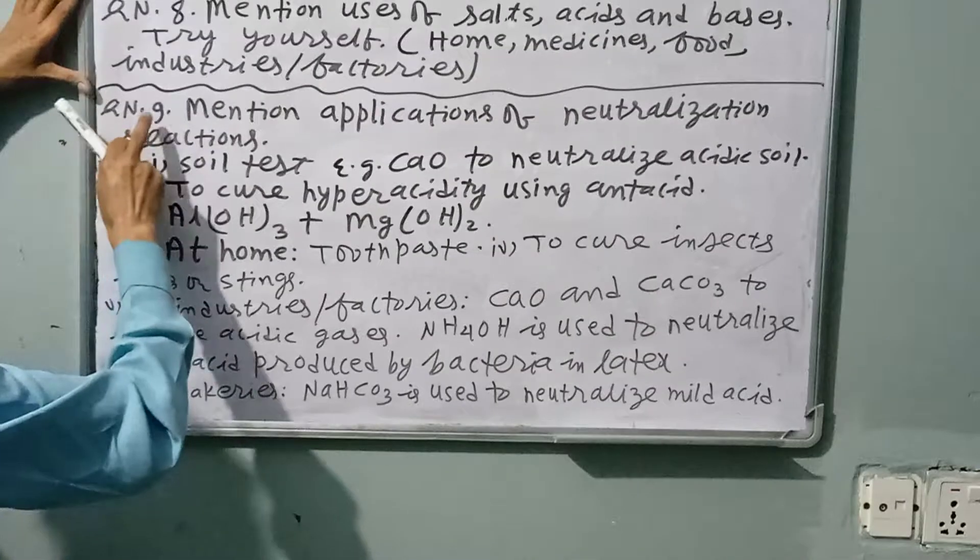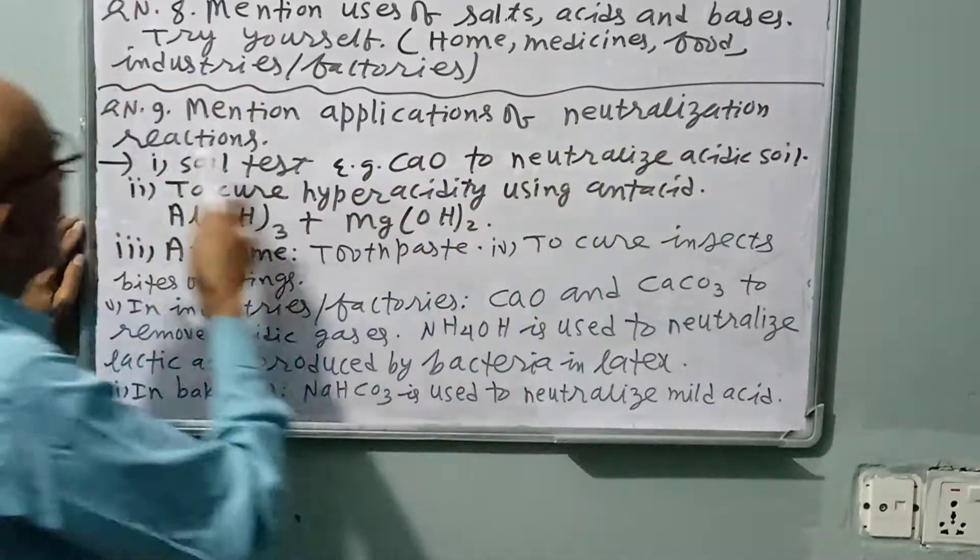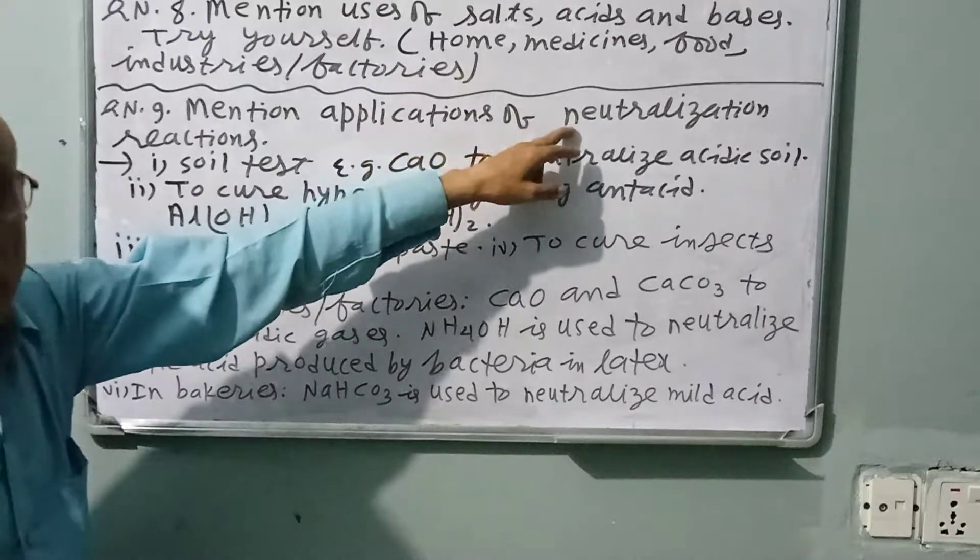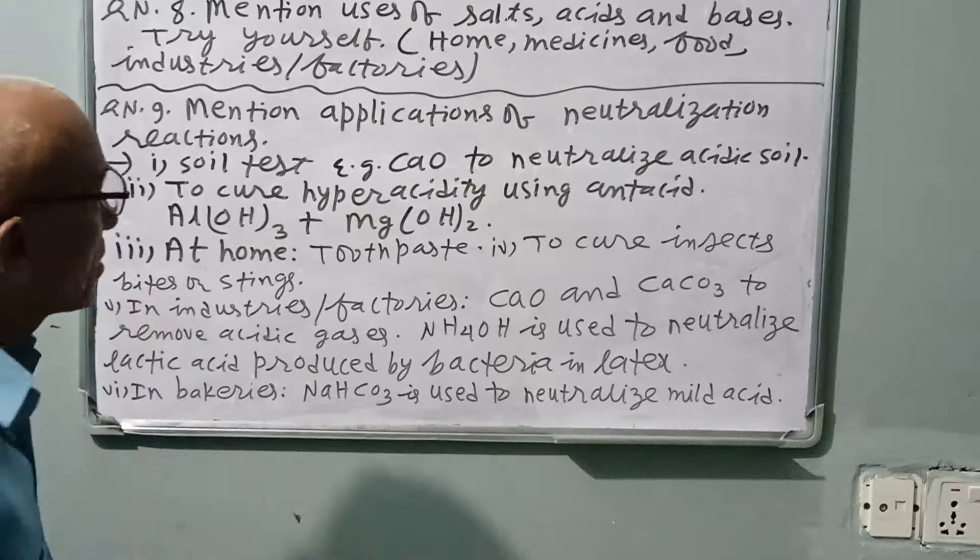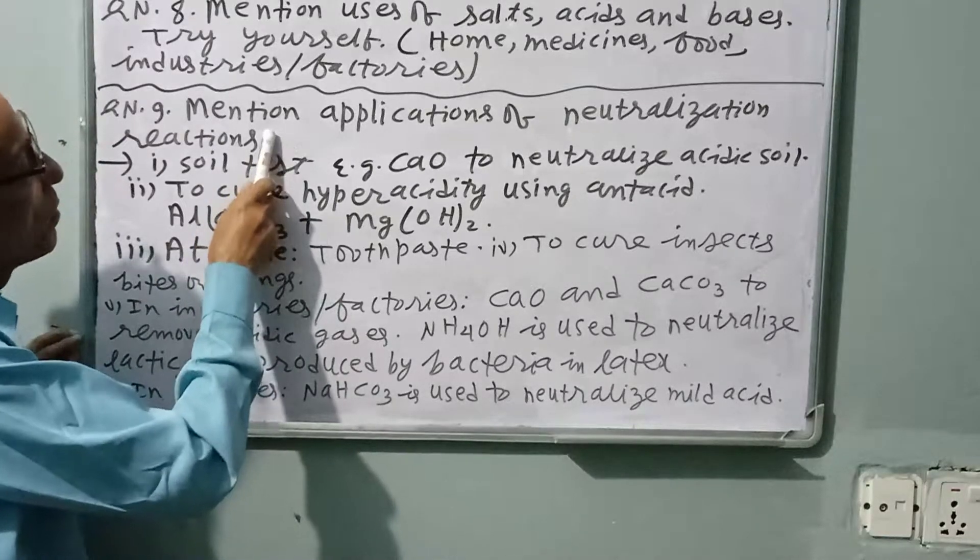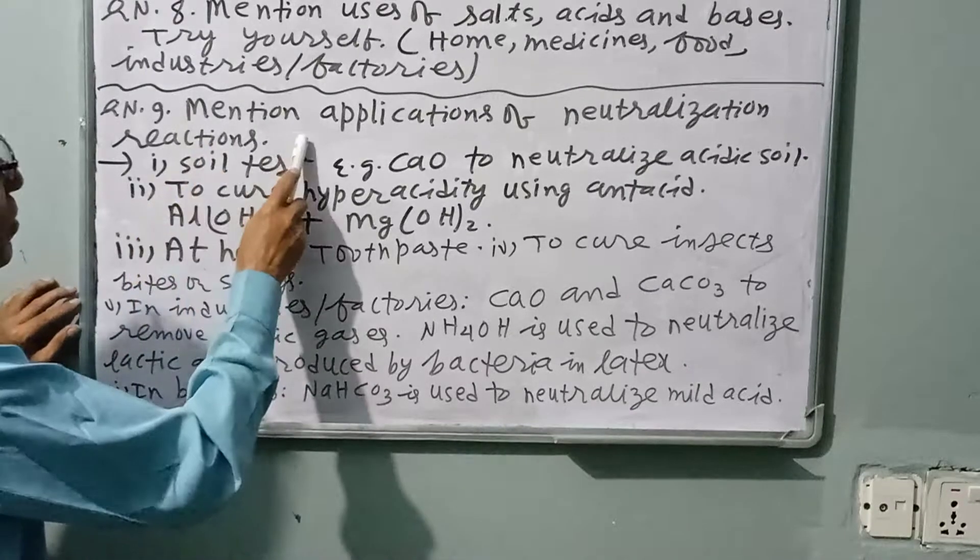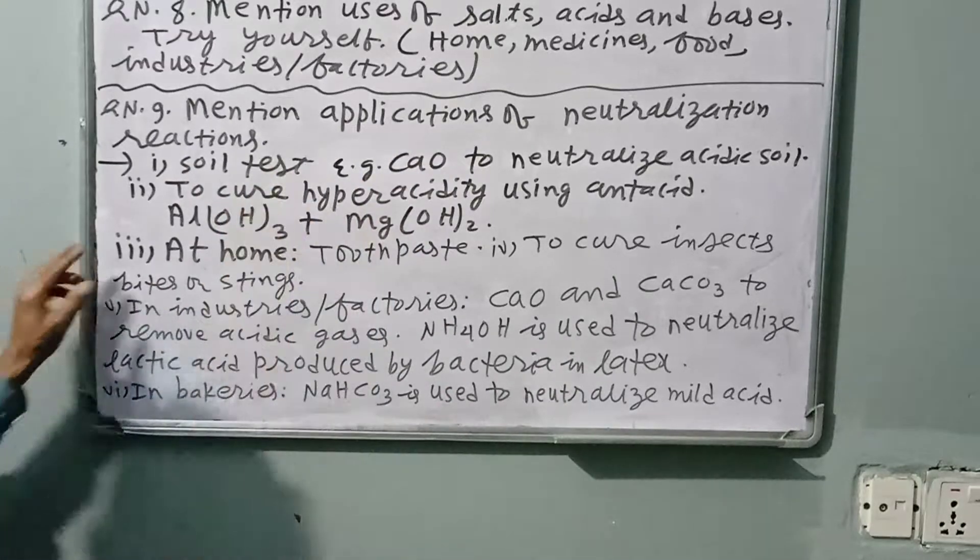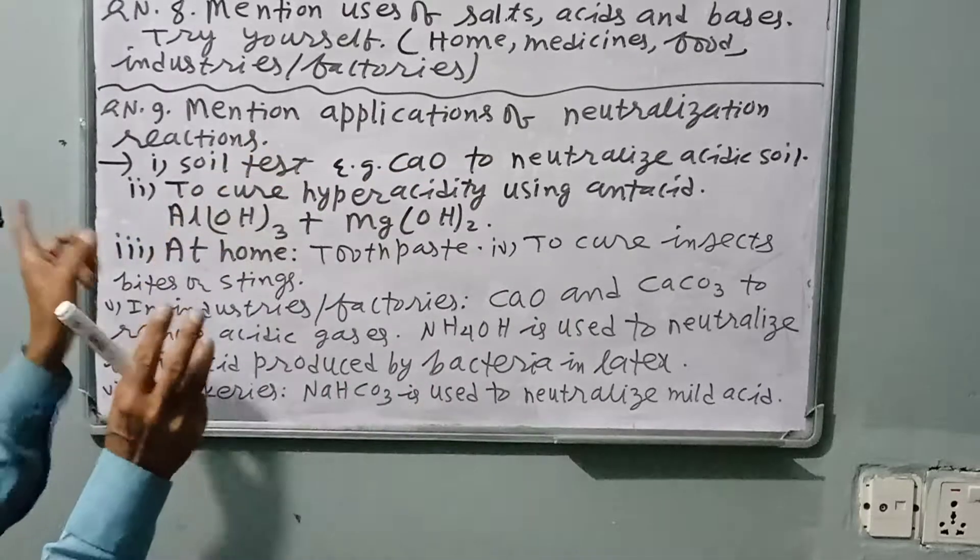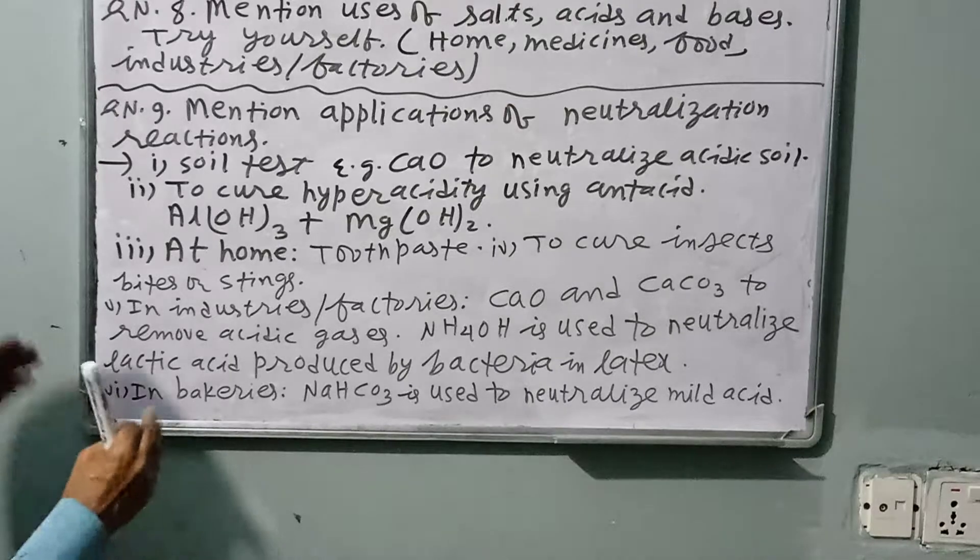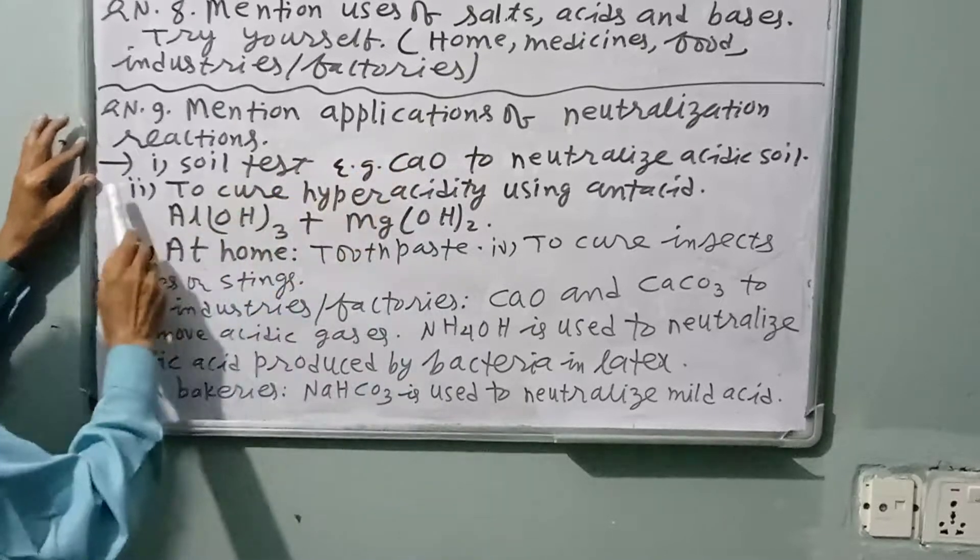Question number 9: Mention applications or uses or advantages of neutralization reaction. We know acid and base neutralize each other, which means acid neutralizes bases and bases neutralize acids. This is an acid-base reaction called neutralization reaction because they neutralize each other. They spoil the properties of each other and new substances are formed. This reaction is very important for the following reasons.